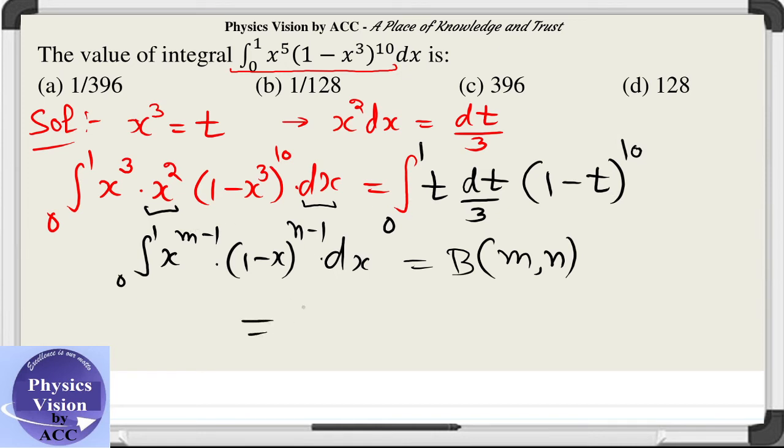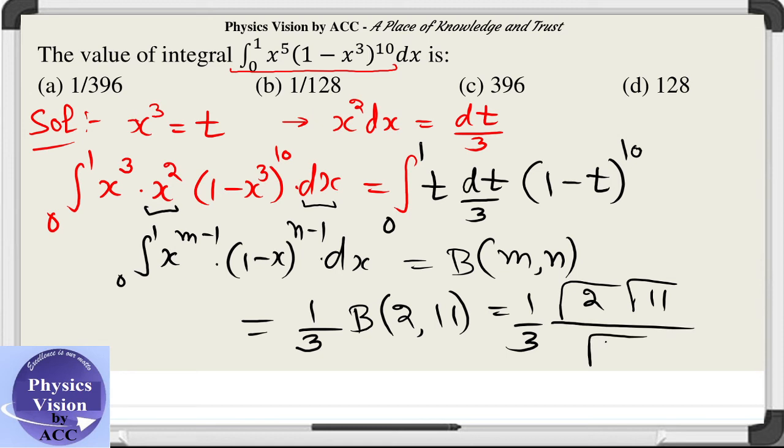The given integral becomes 1 by 3 of beta m is 2 and n is 11. Beta 2, 11, which is calculated by using the relation between beta and gamma. This is gamma 2, gamma 11, and gamma 2 plus 11, that is 13.